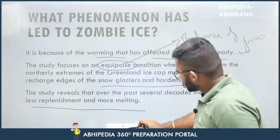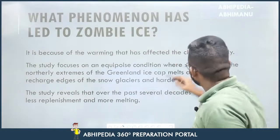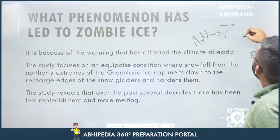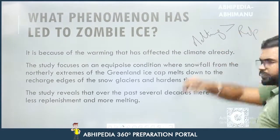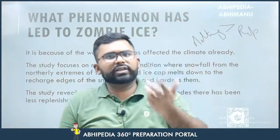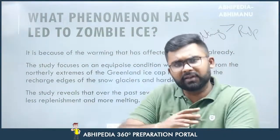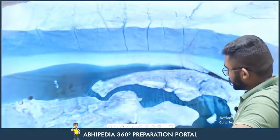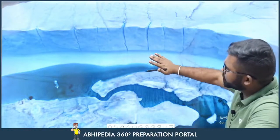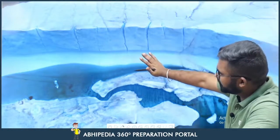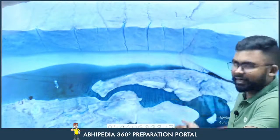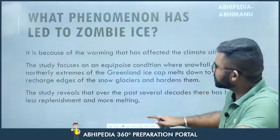The study reveals that over the past several decades there has been less replenishment and more melting. The core equation is: melting is more than replenishment. This means the ice will shrink away. Where re-freezing at the edges should occur, it now melts away instead — that is the concept behind Zombie Eyes.